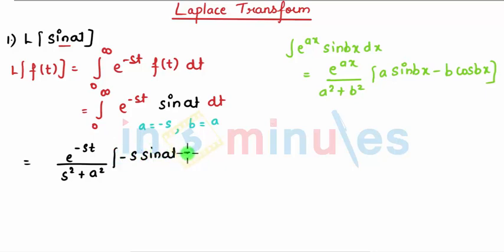By substituting the limits I get, when I put infinity—students you know it very well—e raised to minus infinity is 0, e raised to 0 is 1, and e raised to infinity is infinity.